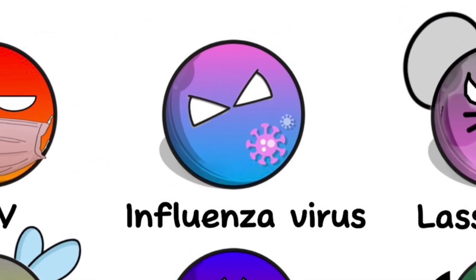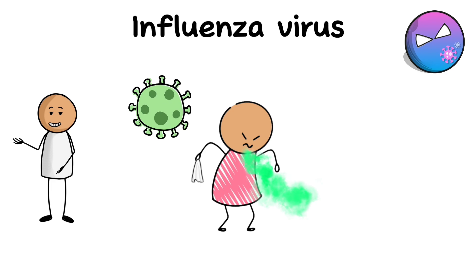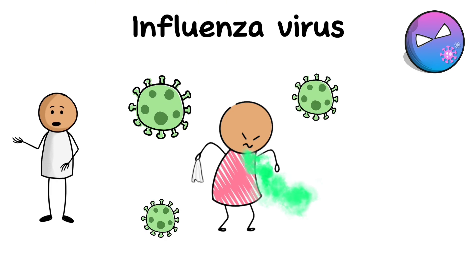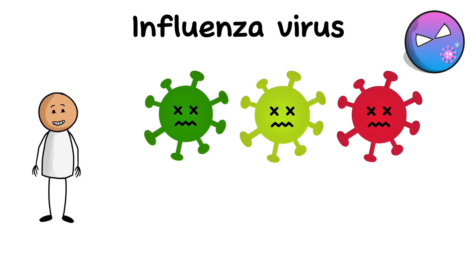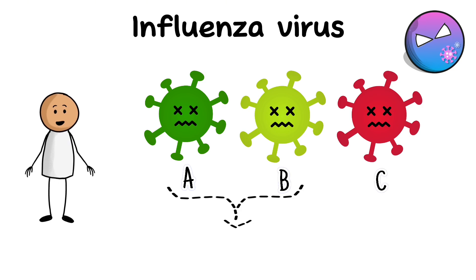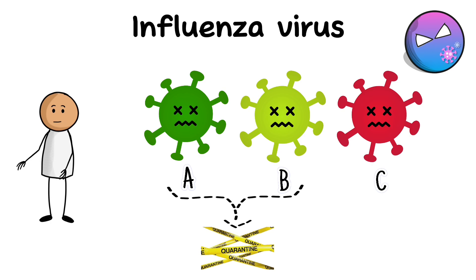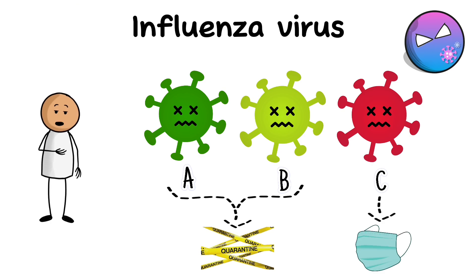Influenza virus. Influenza virus causes an acute respiratory disease known as influenza. It belongs to the orthomyxovirus family and has several subtypes, including influenza A, B, and C viruses. Influenza A and B viruses usually cause serious epidemics and pandemics, while the influenza C virus causes less severe forms of the disease.